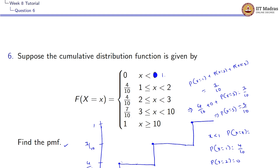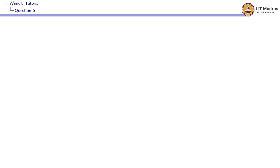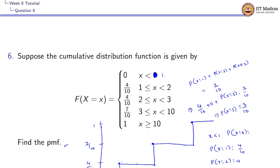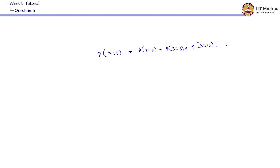After x = 3, from 3 to 10 we won't be having any spike, and exactly at x = 10 we have a spike. So P(X = 1) + P(X = 2) + P(X = 3) + P(X = 10) = 1, since the cumulative probability for x ≥ 10 equals 1. We know P(X = 1) = 4/10, P(X = 2) = 0, P(X = 3) = 3/10, and we have to find P(X = 10). This implies P(X = 10) = 1 − (4/10 + 3/10) = 3/10.